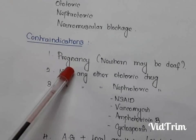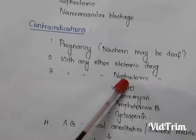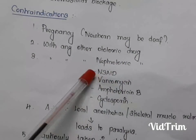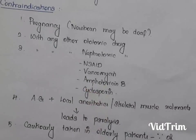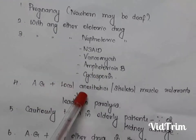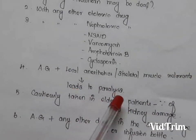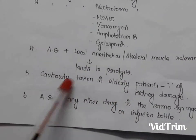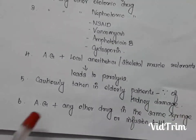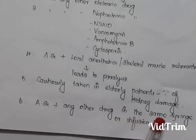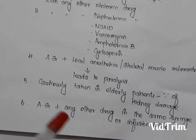Side effects include ototoxicity, nephrotoxicity, and neuromuscular blockade. Contraindications: they should not be used in pregnancy, and should not be combined with other ototoxic or nephrotoxic drugs such as NSAIDs, vancomycin, amphotericin B, or cyclosporine. They should not be combined with local anesthetics or skeletal muscle relaxants, as this leads to paralysis. Caution is needed in elderly patients due to kidney damage, and they should not be combined with any other drug in the same syringe or infusion bottle.